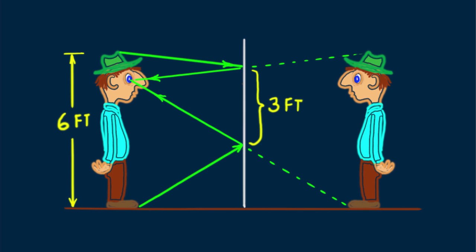This makes sense. He looks halfway down the mirror to see his feet, and halfway above eye level to see his hat. Halfway down and halfway up — that's three feet. So you only need a mirror half your height to view a full-length image of yourself.